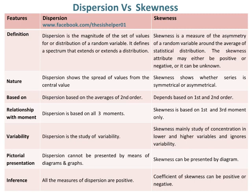Dispersion shows the spread of values from the central value, whereas skewness shows whether a series is symmetrical or asymmetrical.